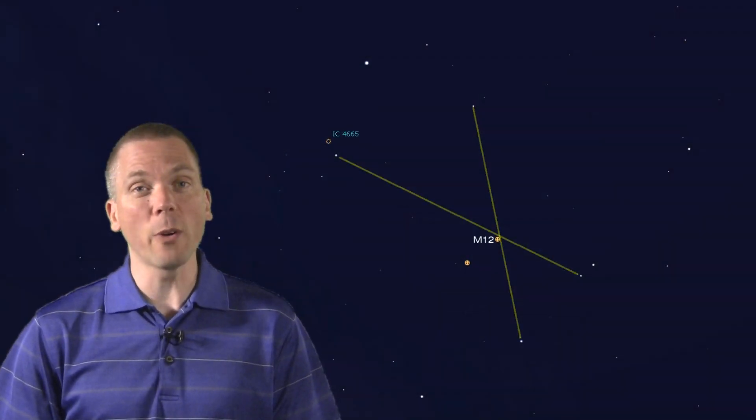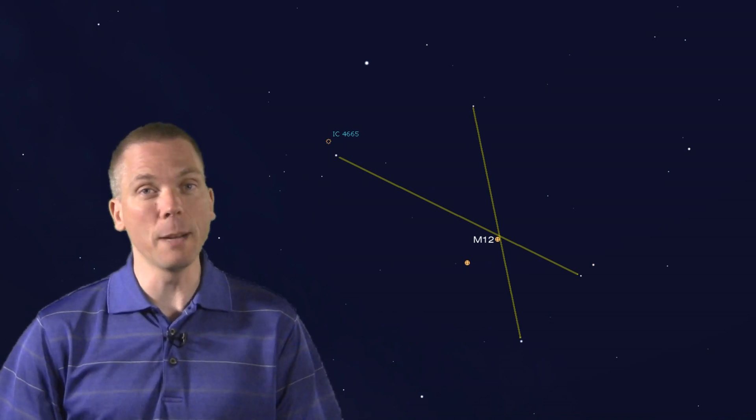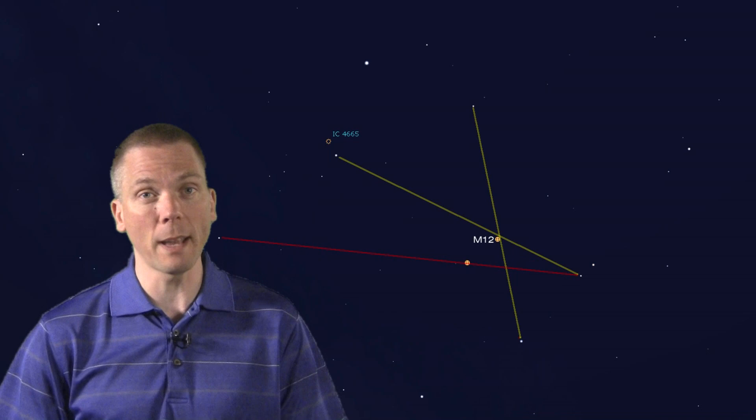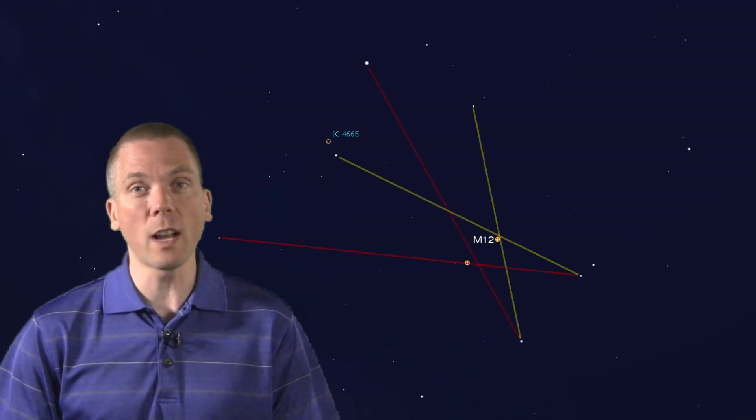For zero power finder locating, draw two more lines in the sky, and look for the intersection of Yed Posterior to Eta Serpentis and Zeta Ophiuchai and Raselhaug.